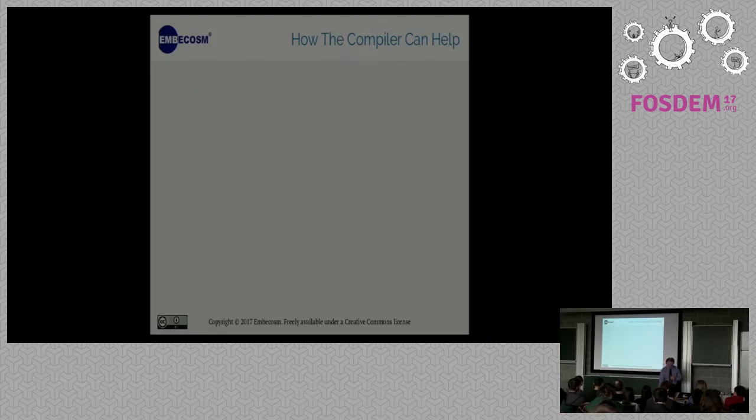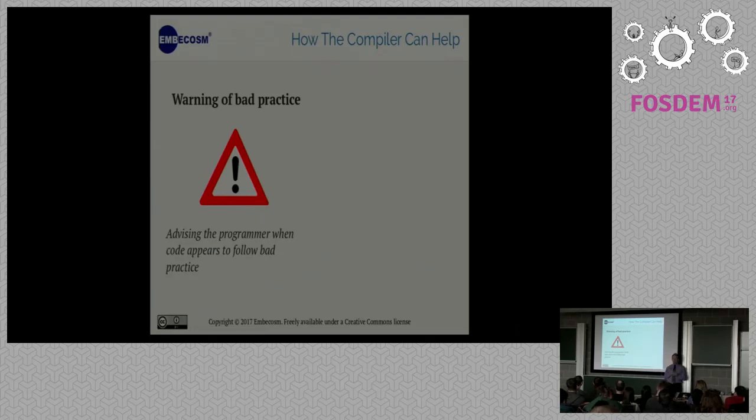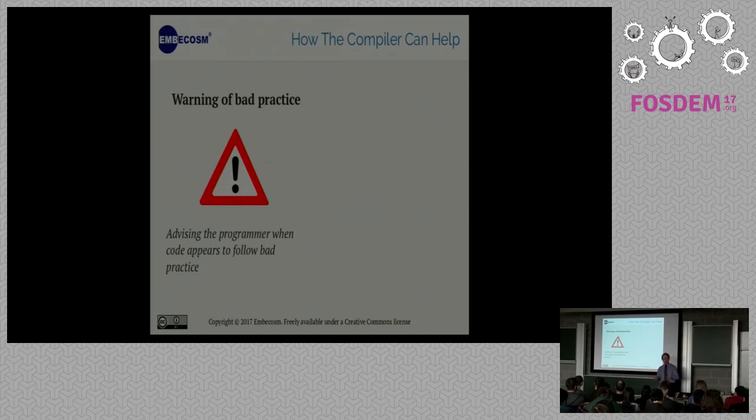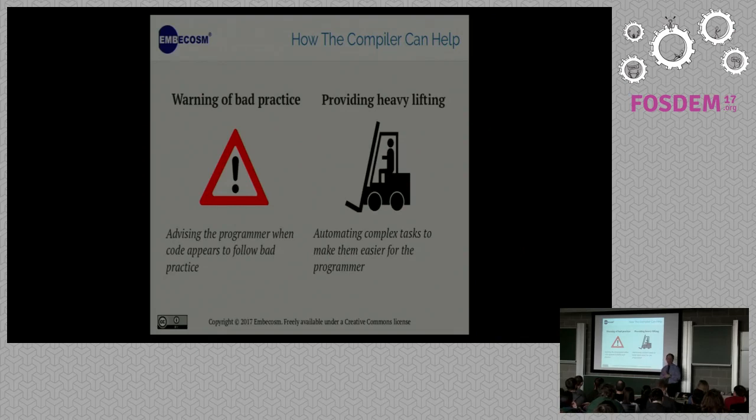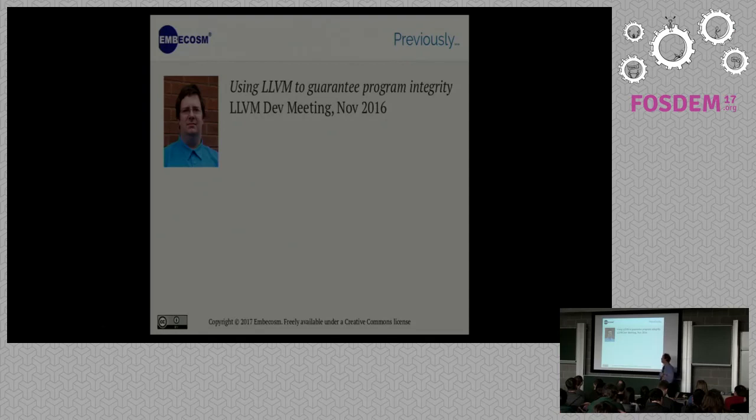There's two ways the compiler can help. First of all, it can tell you if your code looks like it's doing bad things, it's a helpful assistant warning you, this looks bad. Just as the compiler will today warn you, you appear to have an argument to your function that you're not actually using. And secondly, there's the heavy lifting role. There are some very well-known and established secure programming techniques that don't get widely used because they're a right royal pain to actually code up. And the compiler can help by hiding some of that for you.